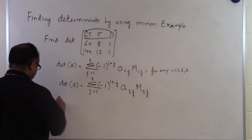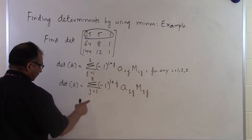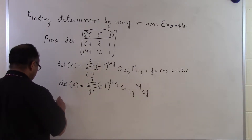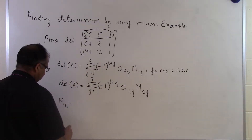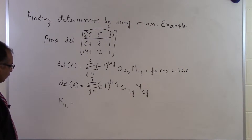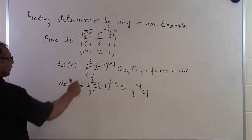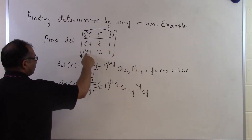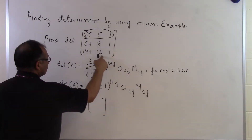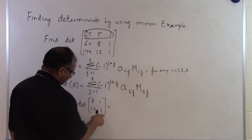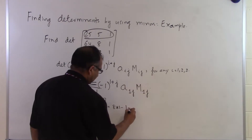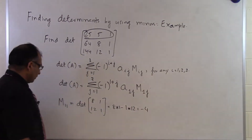Since j takes values 1, 2, 3, I need to find M11, M12, and M13. For M11, I take out the first row and first column and find the determinant of what's left: 8, 1, 12, 1. That gives 8 times 1 minus 1 times 12, which is minus 4. So M11 equals minus 4.